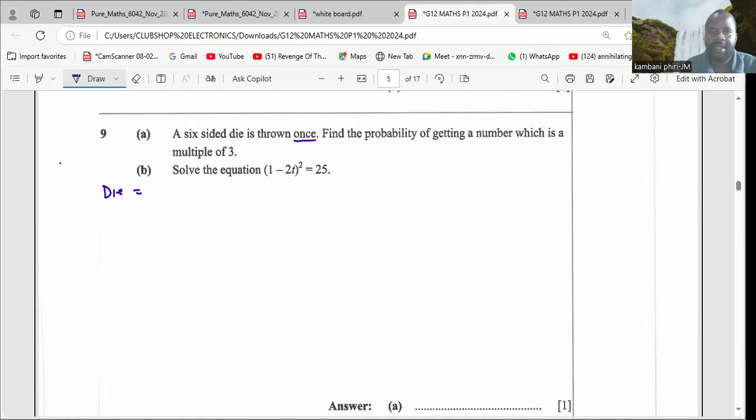When it is thrown, it will have the following possibilities: either one will show up, two, three, four, five, up to six. Any of these can show. Now we want the probability of getting a multiple of three.